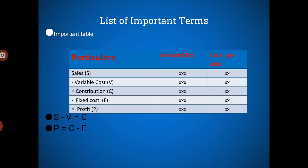Starting with the very first important item — the important table. This table is not new for you; you have already studied all these things in your cost accounting. There are three columns in the table: Particulars, Amount, and Cost Per Unit. In the examples it may not be possible to have both amount and cost per unit. Based on the available data, we need to prepare this table. We need to start this table by writing the amount of sales.